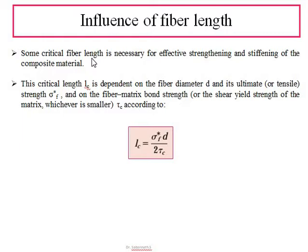The critical length of any fiber can be calculated based on certain equations. Without going into full derivations, the critical length depends on three factors: the fiber diameter, the ultimate strength transmitted from the matrix to the fibers, and the fiber-matrix bond strength, denoted by τ_c. The critical length equation is based on these three factors.